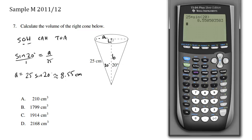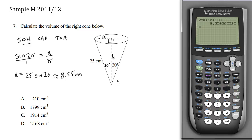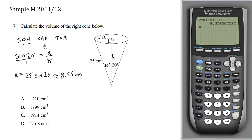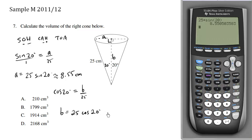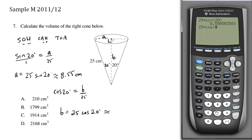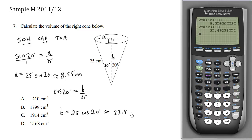Now we solve for the B value. B is the adjacent side and we know the hypotenuse, so we use the cosine ratio. Cosine of 20° equals adjacent over hypotenuse, so B over 25. Multiplying both sides by 25, B equals 25 cosine 20°, which is approximately 23.49.